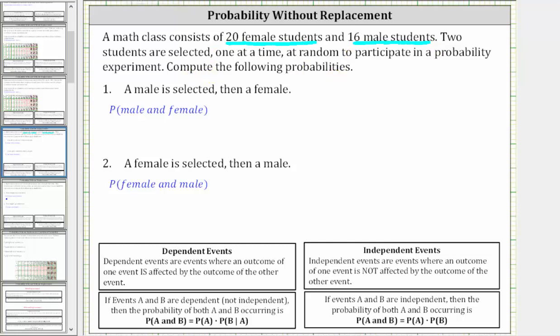Before we begin, notice there are a total of 20 plus 16, or 36 total students. The two events of selecting two students one at a time are dependent events, not independent events.